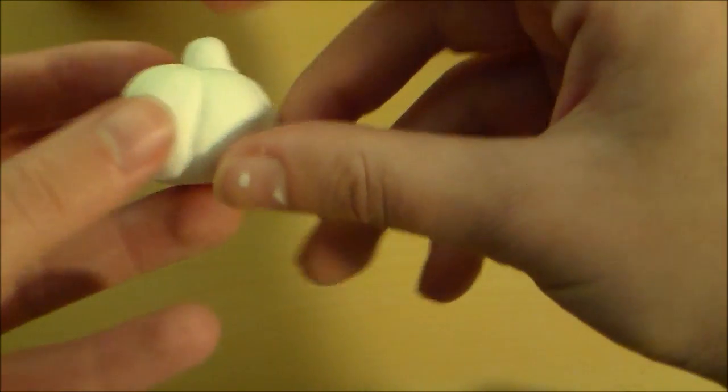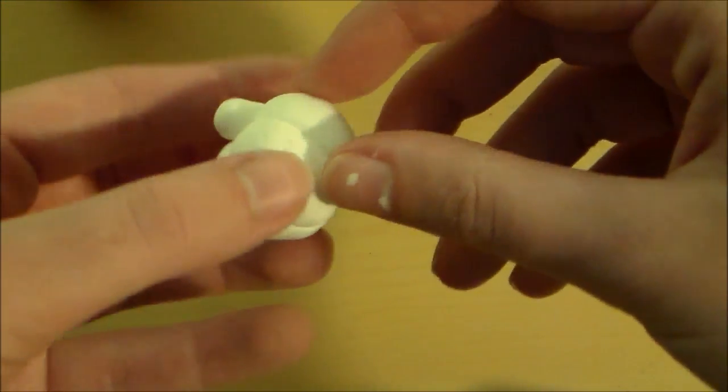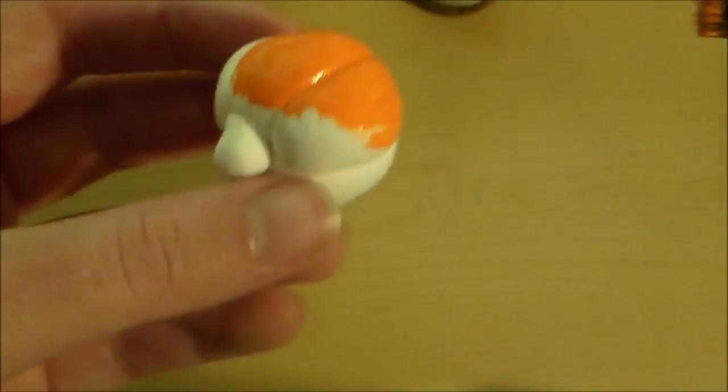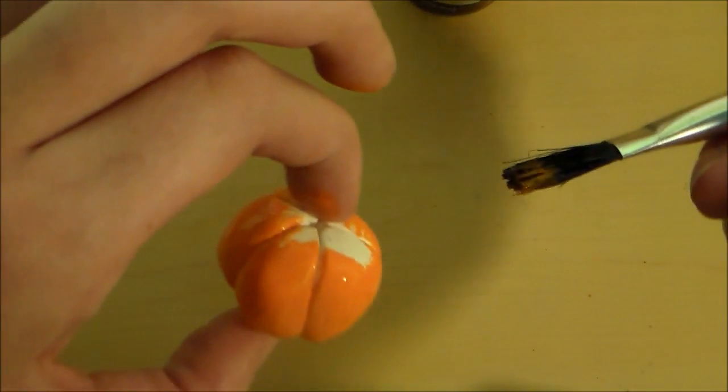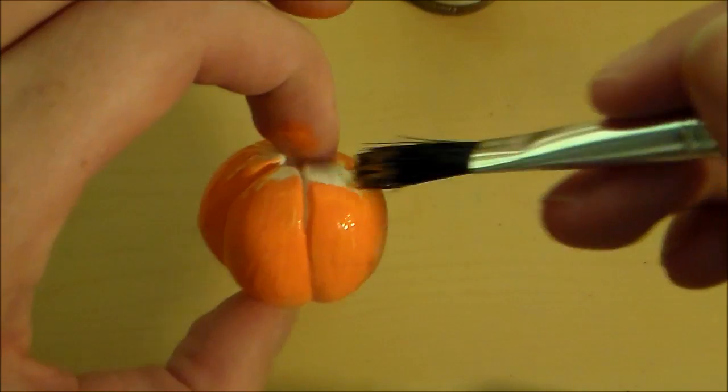So we're going to paint this little thin piece brown and the rest of it orange. Make sure to leave the bottom piece dry. That way there's a place for it to sit while the sides dry. And then you can paint the bottom and the top when the orange is dry. So we'll come back to that in a second.